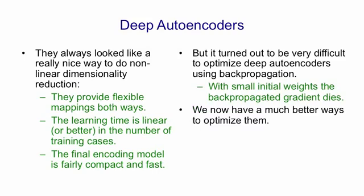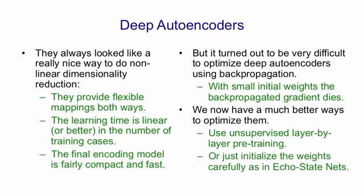But now we have much better ways to optimize them. We can use unsupervised layer-by-layer pre-training, or we can simply initialize the weights sensibly, as in echo state networks.